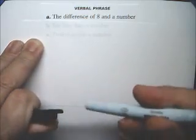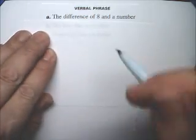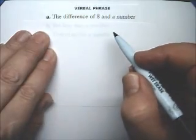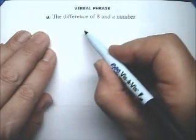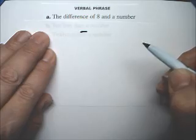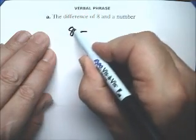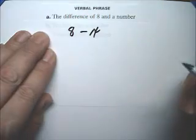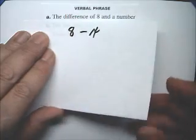The difference of 8 and a number. Well, the difference is subtraction, so we have to have subtraction. The difference of 8 and a number is 8 minus X.